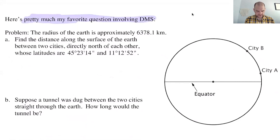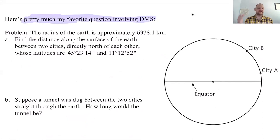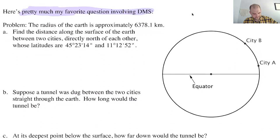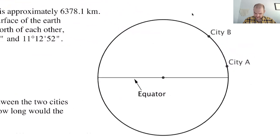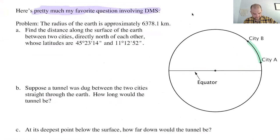So we are given that the radius of the Earth is approximately 6,378.1 kilometers. I just googled that and took the answer it gave me. The Earth isn't a perfect sphere, so this is really an approximation, but that's okay — it's close enough for our purposes. So what we want to do is find the distance along the surface of the Earth, meaning you're walking along the surface, not digging through.